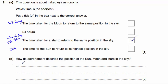And part B, how do astronomers describe the position of the sun, moon and the stars in the sky? They use a system called right ascension and declination.